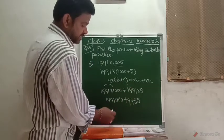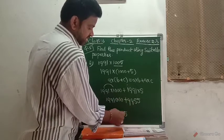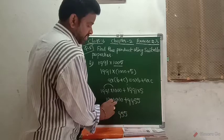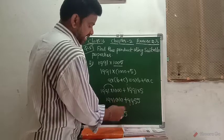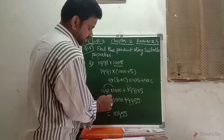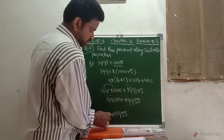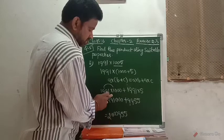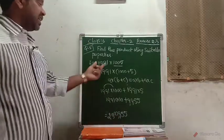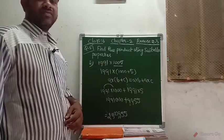You just add these two numbers to get the final result: 0 plus 5 is 5, 0 plus 5 is 5, 0 plus 9 is 9, and 1 plus 9 is 10, carry 1; 1 plus 9 plus 1 is 11, carry 1; then 2. So the final result of 1991 into 1005 is 1,99,55 — giving us the answer using the distributive property.